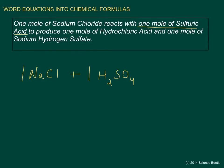The next item we need to take care of is the phrase 'to produce.' That means we're going to have a right-facing arrow, indicating that something is created on the other side. What does it produce? It produces one mole of hydrochloric acid. Acids begin with an H, and since it's chloric, it's chlorine as well — so this is HCl.